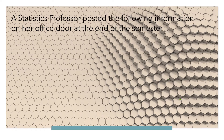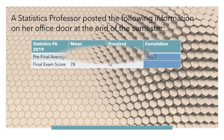To understand this, let us make use of an example. A statistics professor posted the following information on her office door at the end of the semester: the mean of the pre-final average is 75, the standard deviation of the pre-final average is 8, the mean of the final exam score is 78, the standard deviation of the final exam score is 12, and the correlation coefficient r between x and y is 0.7, where x is the pre-final average and y is the final exam score.